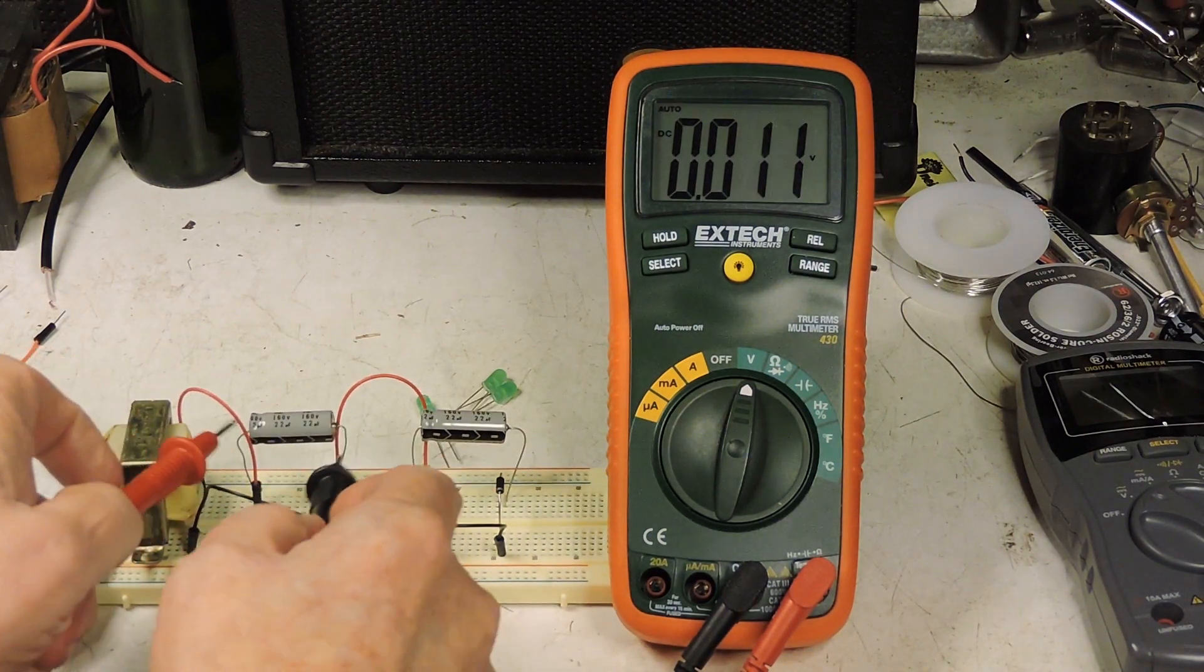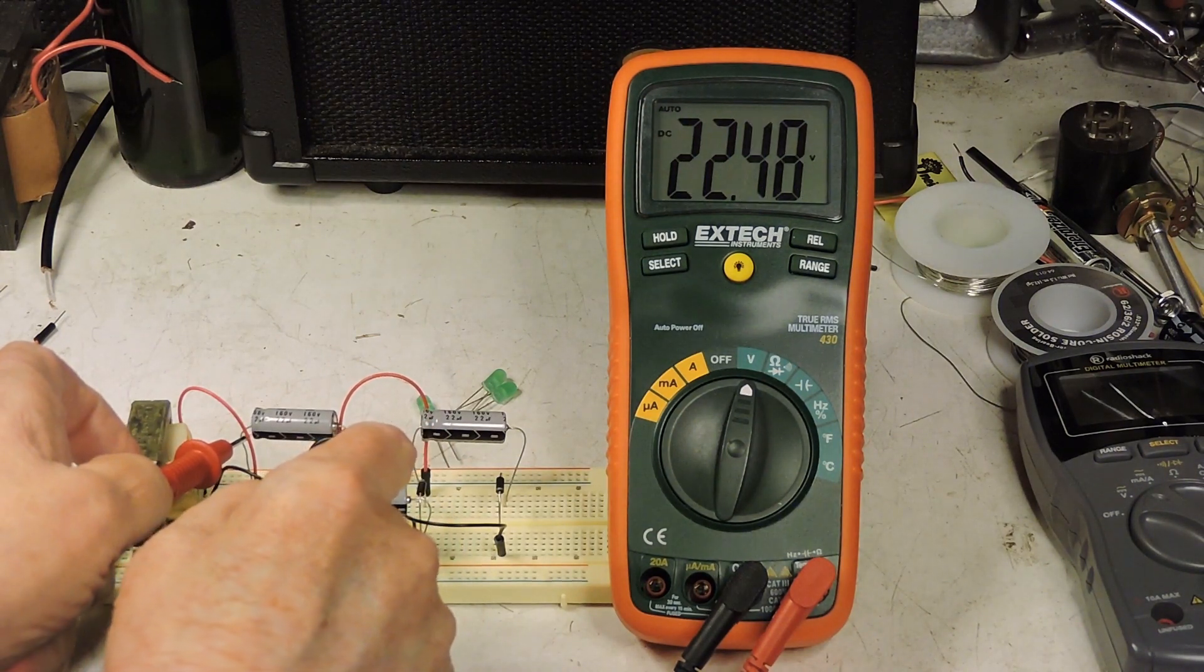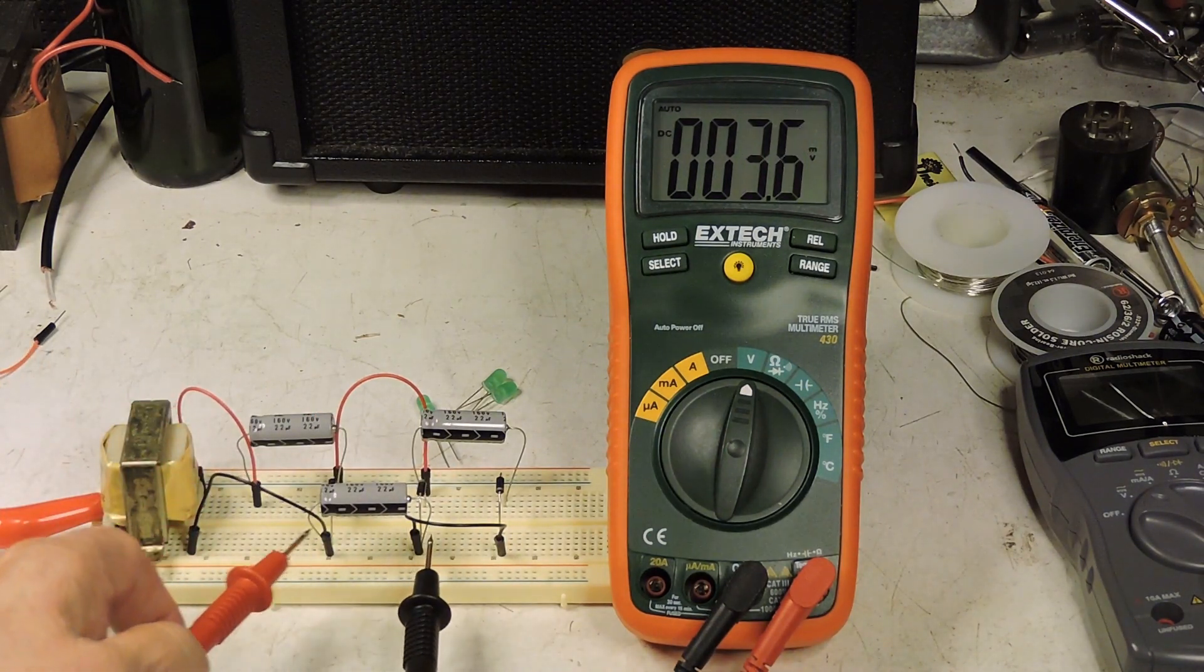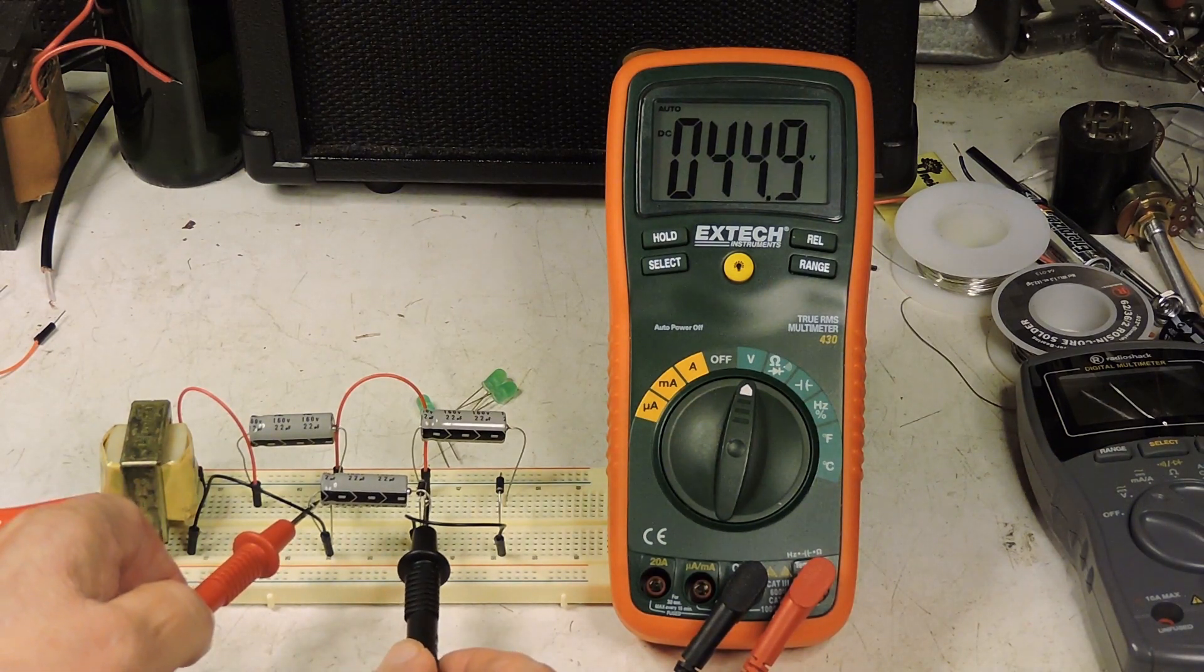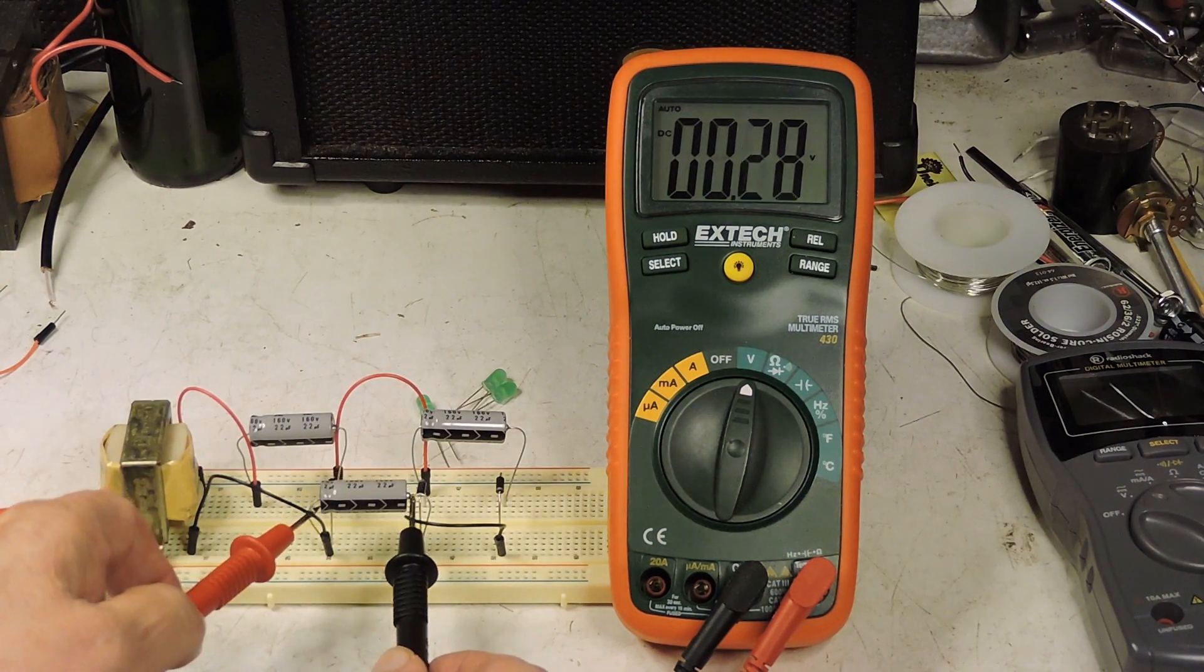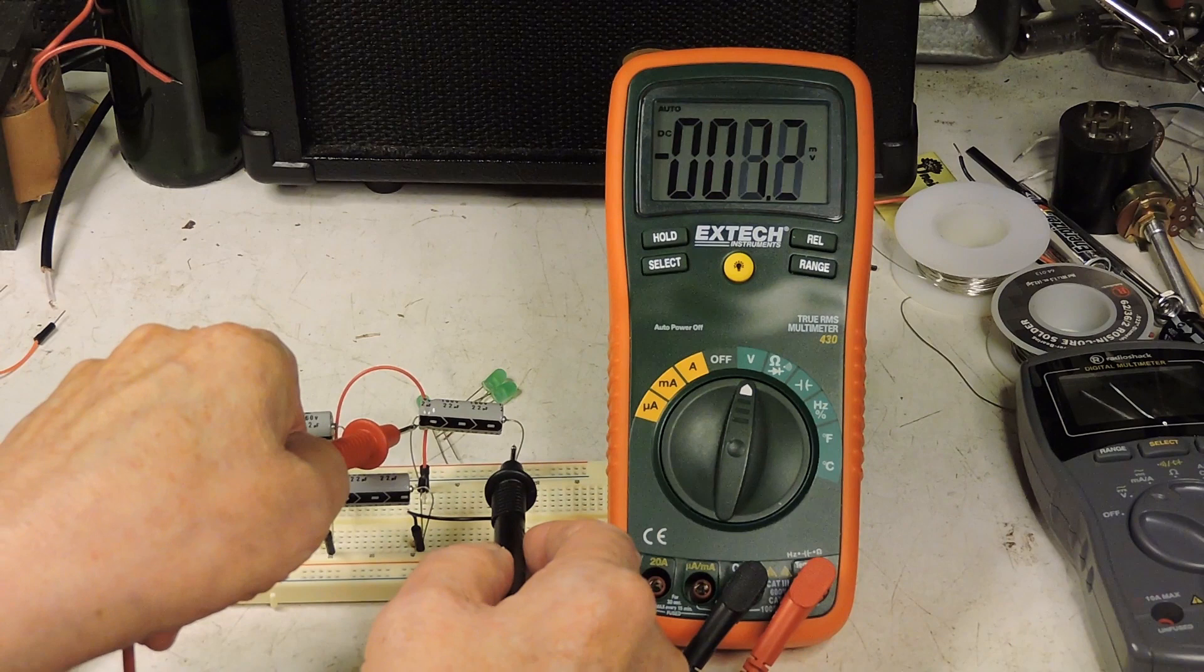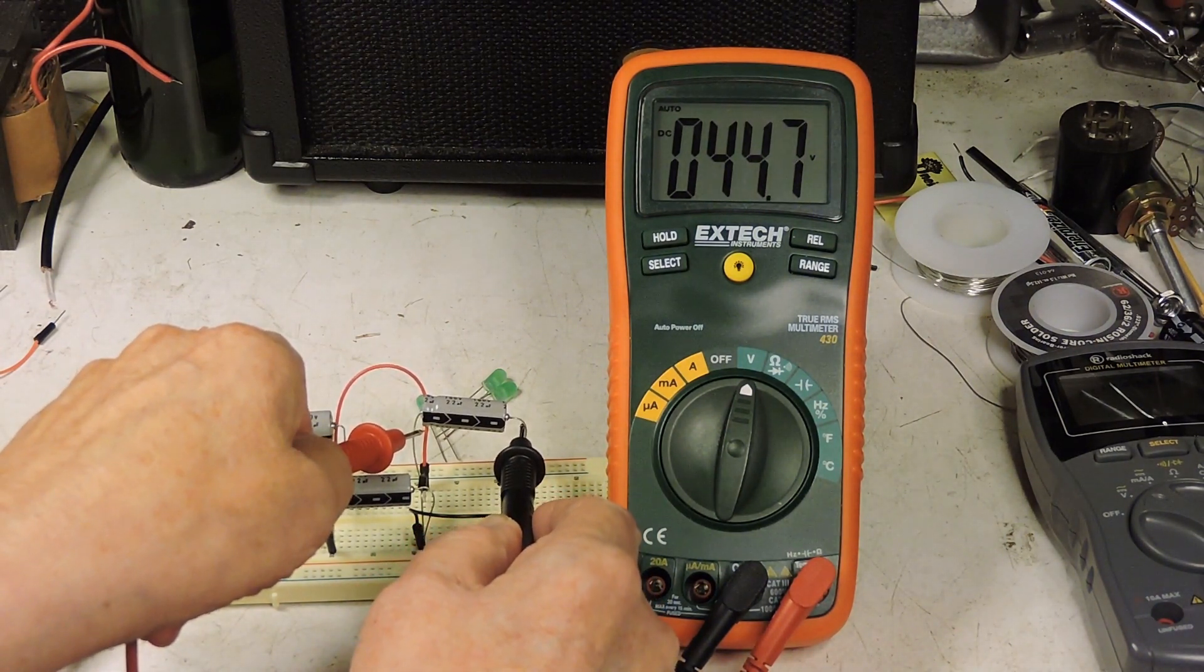About 22 and a half volts. Now C2, 48.7, and C3 should be the same. Yep.